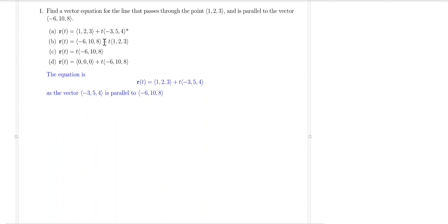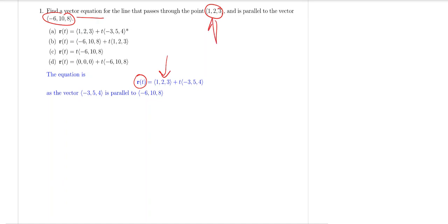This question asks you to find the vector equations for a line that passes through this particular point and parallel to these vectors. They already give you all the necessary information to construct the line equations in vector form. Recall, in order to construct this line equation in vector form, we need a point that is on the line, which is given right here, and a directional vector which is parallel to these vectors.